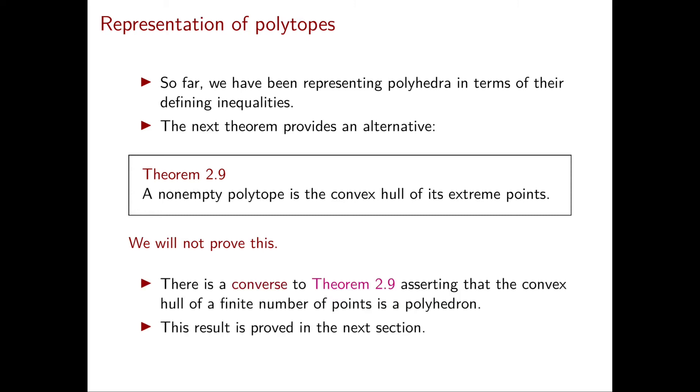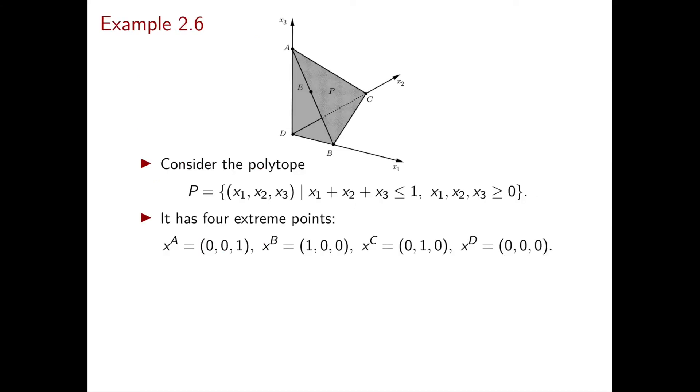Soon we will prove a theorem which can be seen as a converse of Theorem 2.9. We will see that the convex hull of a finite number of points is always a polyhedron. For now, instead of proving these results, I want to give you a few examples so you can get your hands dirty with these two different representations of polytopes.